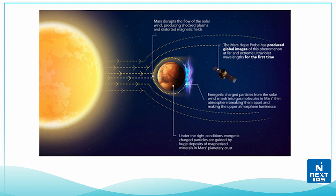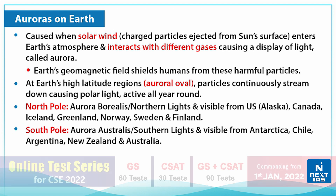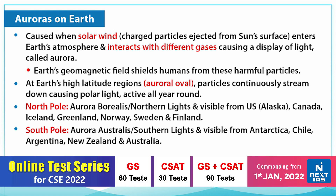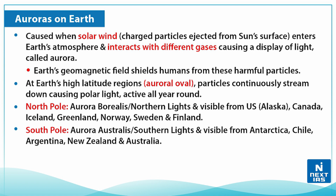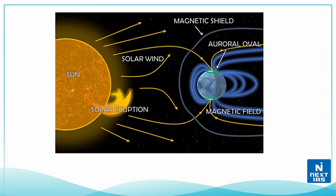As you can see in the picture, discrete auroras can be seen all around Mars at nighttime. If we talk about auroras on Earth, they are caused when the solar wind — specifically the charged particles ejected from the sun's surface — enters the Earth's atmosphere.